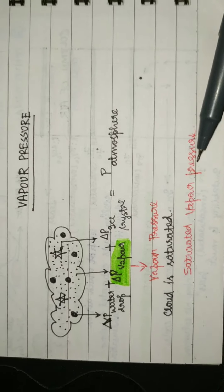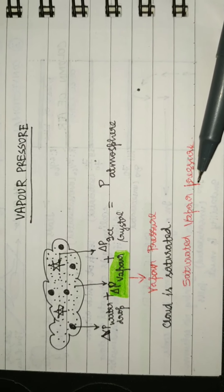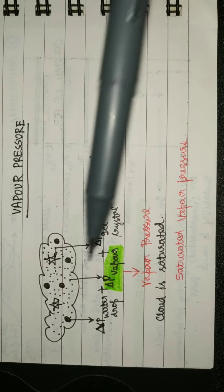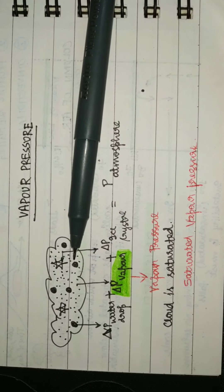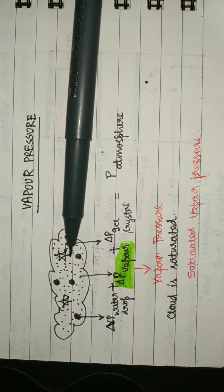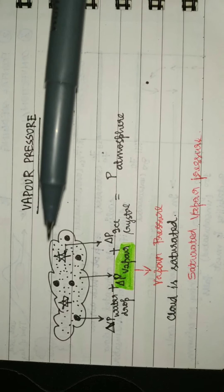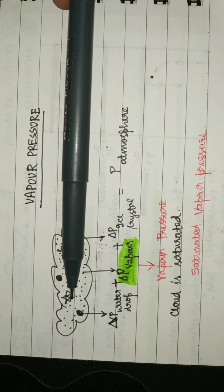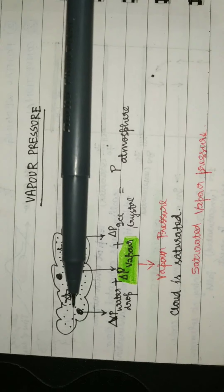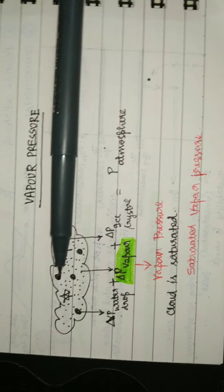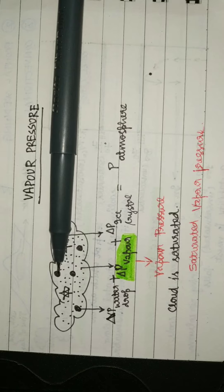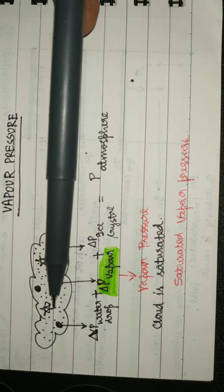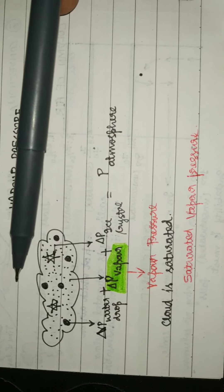When the cloud is saturated, then the pressure exerted is known as saturated vapor pressure. Okay, so I need to tell you one concept before starting to understand precipitation. Here is ice and this is the water droplet.